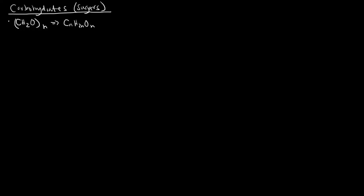An example we're going to talk about later is glucose, which is just C₆H₁₂O₆. The simplest carbohydrates are monosaccharides, which basically just means one sugar. These are the simplest sugars — simple sugars that can't be broken down further. We're going to talk about them specifically in a later video, but I want to introduce carbohydrates as a concept first.